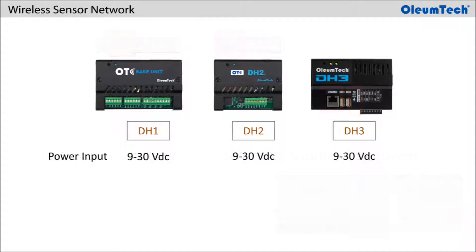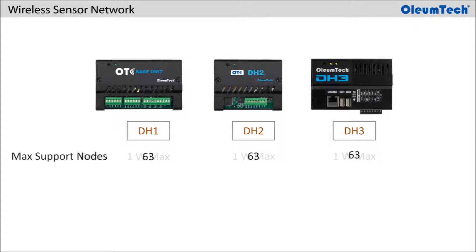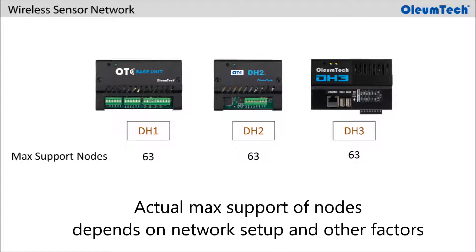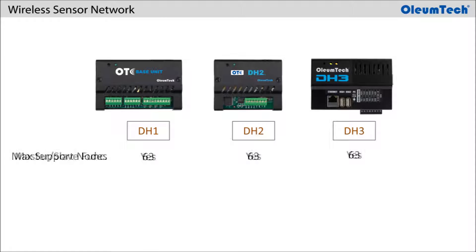As for the similarities, all gateways support 9-30 volt DC input power and are equipped with adjustable 1 watt max radios. They have the ability to support up to 63 nodes, and the actual number of nodes supported will be based on the RF bandwidth and throughput depending on the transmission intervals, data packet sizes, and complexity of the networking architecture. They all support Modbus master and slave function.